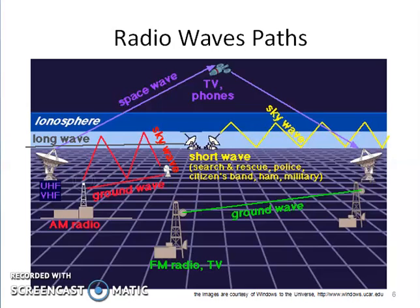The third mode is space wave propagation. If the signal is more than 30 MHz, it penetrates the ionosphere and reaches a satellite, as shown in the figure above the earth's surface, and is then reflected back to earth, thereby completing the communication from source to destination.